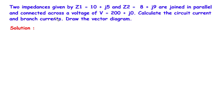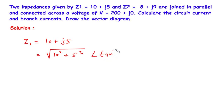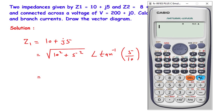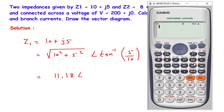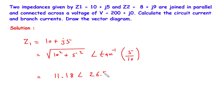Solution. First, we will write what is given. The impedance Z1 = 10 + j5 is given in rectangular form, so we convert it to polar form: under root of (10² + 5²) at an angle of tan⁻¹(5/10), which gives 11.18 at an angle of 26.56°. So Z1 = 11.18∠26.56° ohm.